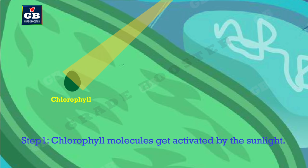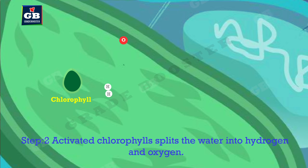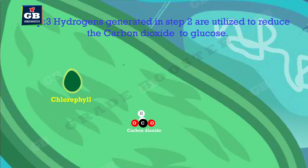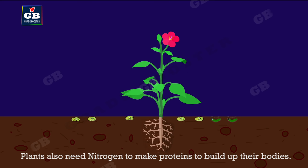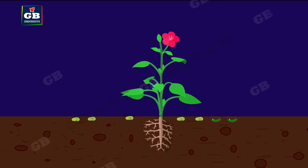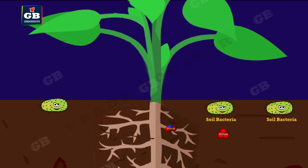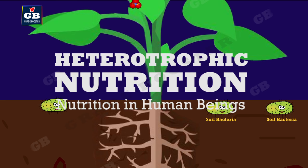The steps of photosynthesis: Step 1 — chlorophyll molecules get activated by sunlight. Step 2 — activated chlorophyll splits water into hydrogen and oxygen. Step 3 — hydrogen generated in step 2 is utilized to reduce carbon dioxide to glucose. Plants also need nitrogen to make proteins to build up their bodies. Atmospheric nitrogen is made into nitrites and nitrates by soil bacteria, and plants get it from the soil in the form of nitrites and nitrates.